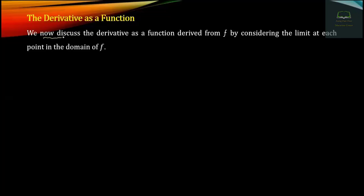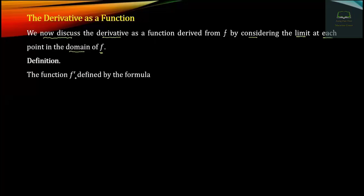Now, this is what I am going to say about the derivative as a function. Here, to show a function, this is what we have to say about the derivative. The formula for the derivative is: f prime is equal to the limit as h approaches zero of f of x plus h minus f of x, divided by h. So we get to your formula.